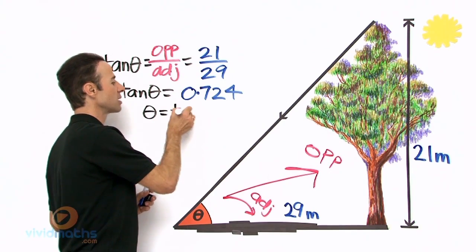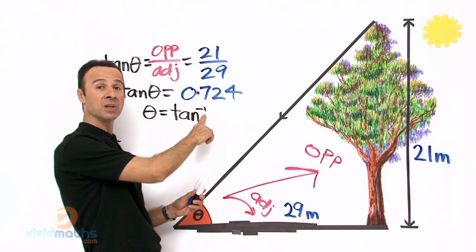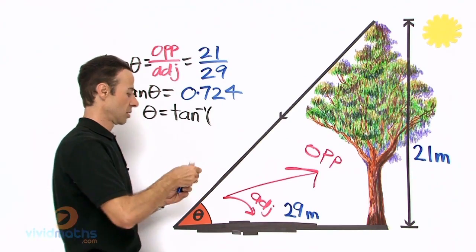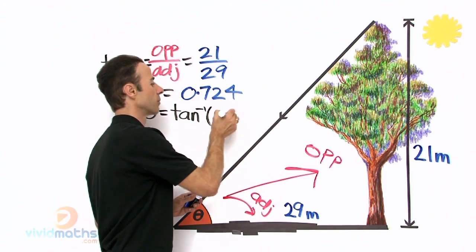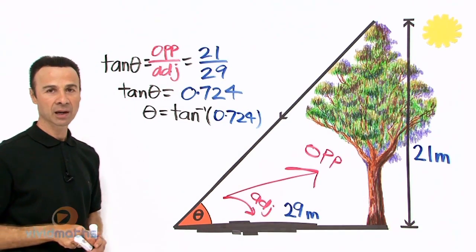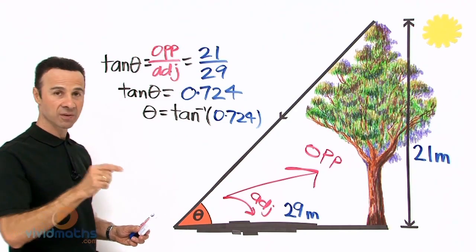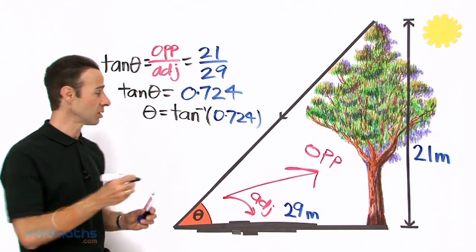Now the way to do that is we inverse tan on both sides, or shift tan if you prefer. So that means we have on the right hand side now tan inverse, that little power to negative 1 means shift or inverse, and then we have 0.724 in there. Now we can put that in the calculator.